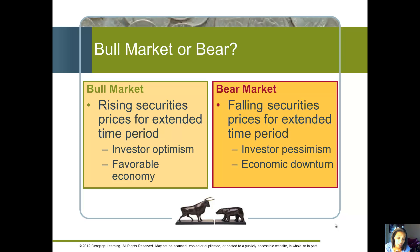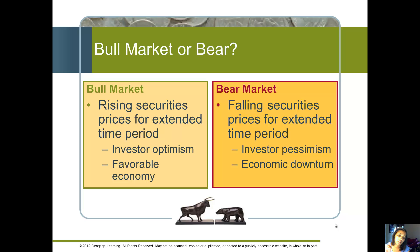The bear market would be the opposite. In the bear market, the securities prices are falling. One way to remember it is to check out the bull and the bear at the bottom of the screen. The bull's horns are pointing upward, so that's a reminder that a bull market means it's rising. And when the bear attacks, it puts its head down, which reminds you that prices are falling.